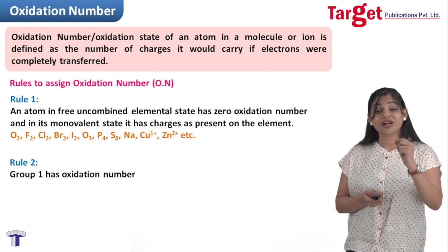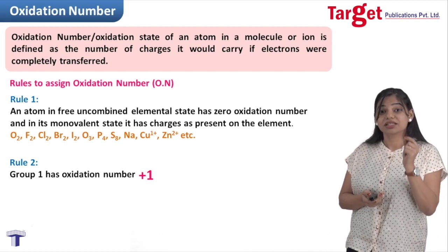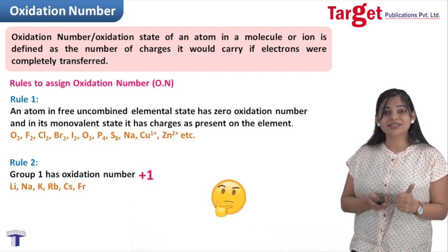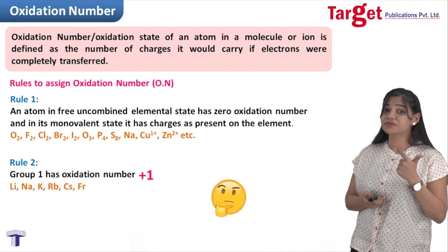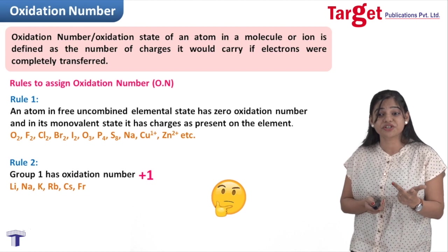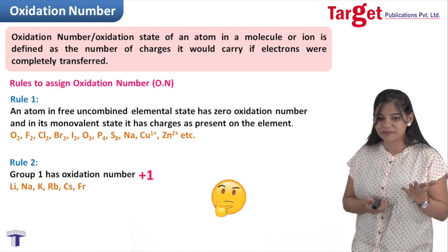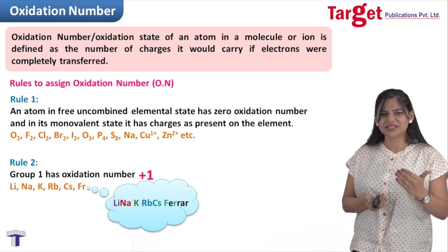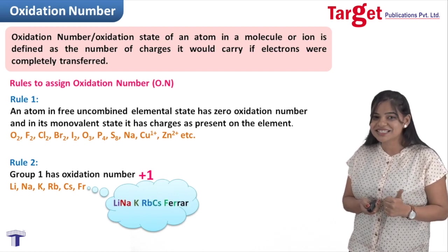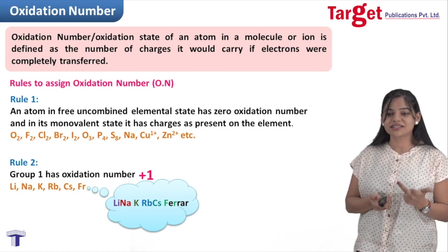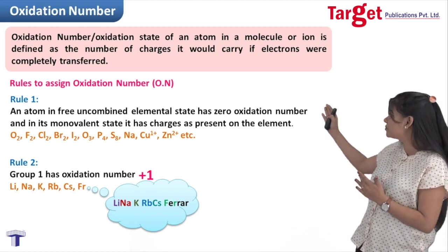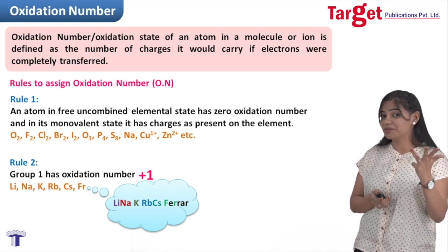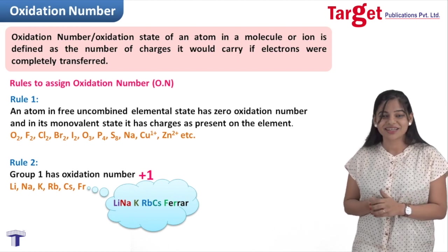Rule 2: for alkali metals, the oxidation number is always +1. Which are the alkali metals? They are lithium, sodium, potassium, rubidium, cesium, and francium. A simple mnemonic to remember all six elements is: 'Lena ke RBCs, Farah.' Group 1 elements always have a +1 oxidation state.